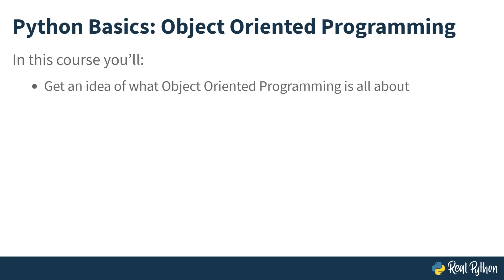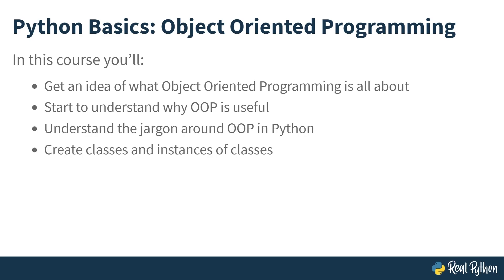So in this course, you'll be getting an idea of what object-oriented programming is all about. You'll start to understand why OOP, which stands for object-oriented programming, is useful. Every language that uses OOP has slightly different terminology. In this course, you'll be learning all the Python jargon. For instance, in Python, objects are created from classes, which are sort of blueprints for the object. So you'll be creating classes and instances of these classes.